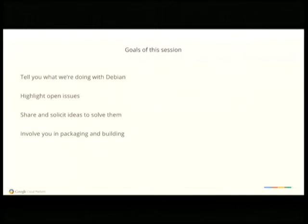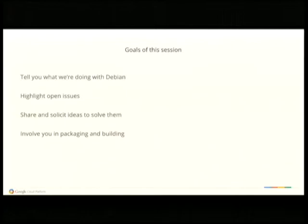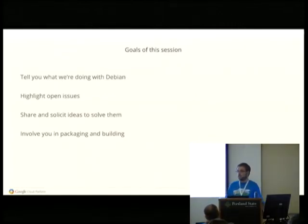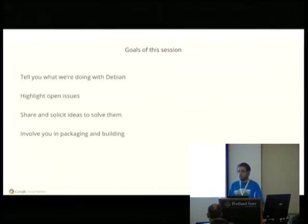Not everybody in Debian knows what Google has been doing with Google Compute Engine and Debian. I want to give you the backstory of where it's been over the last year and a half, give you some of the open issues we've been working on, share some of the things that have been going well, some of the things that have been going a little less well, and discuss some ideas on how to solve the issues we're currently struggling with. We'd also love to get more of you involved in packaging the Google software for Debian properly, and get you involved in building our images.